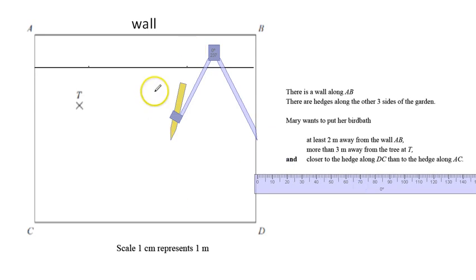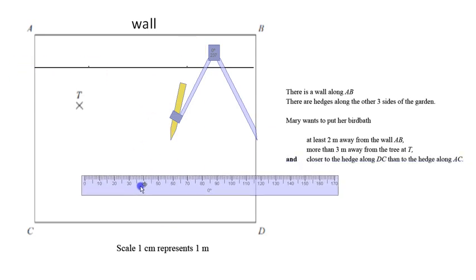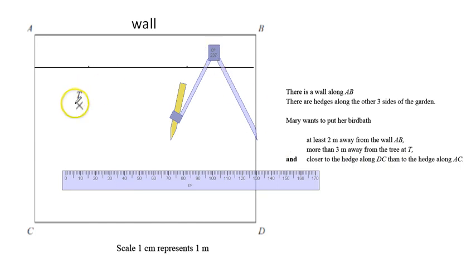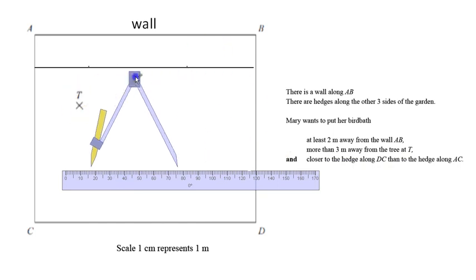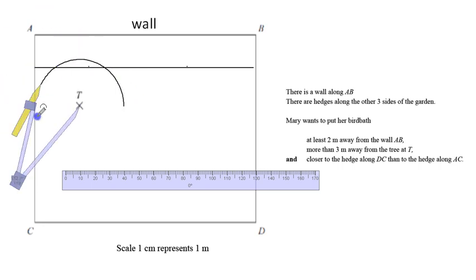So I want to be below this line, I want to be somewhere in this rest of the garden. It says she wants it three meters away from the tree, so here's our tree. Three meters away means I'm going to measure three meters exactly on my protractor—sorry, compasses—and then I'm going to draw a circle around here.